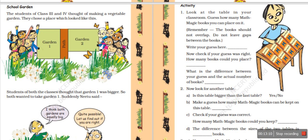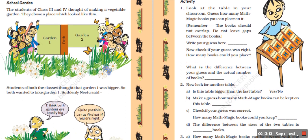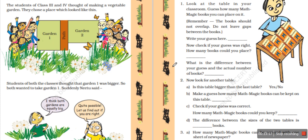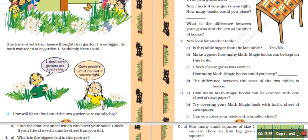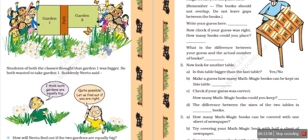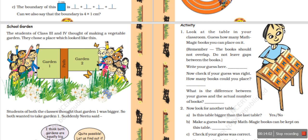In the next part of the chapter: school garden. Class 3 and Class 4 students were told to make gardens. The students of both classes thought that garden 1 was bigger and both wanted to take it. To find out if two gardens are the same size, we check their boundary walls. If the boundary walls are the same, the gardens are the same size. We can use a rope or scale to find out.